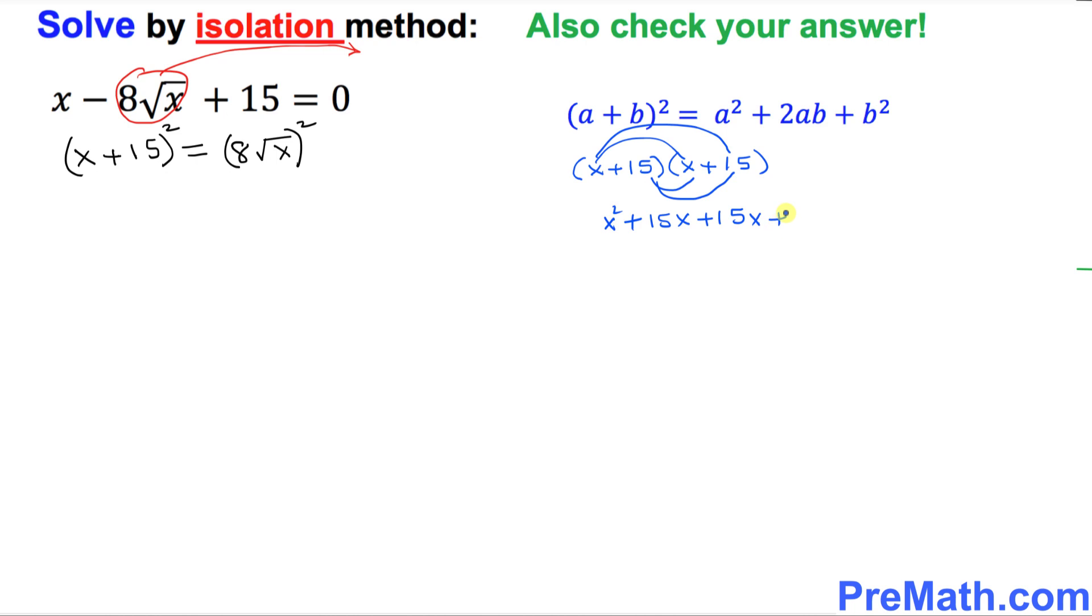And finally, 15 times 15 is 225. Let's combine these like terms. We got x square plus 30x plus 225. So we're going to go ahead and put this, whatever we got, we are going to put it right here on the left-hand side. So I can put x square plus 30x plus 225.